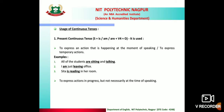Usage 2: to express actions in progress but not necessarily at the time of speaking — actions happening around this time. For example: 'India is exporting sugar to other countries.' Here 'is exporting' indicates present continuous tense. It may not be happening at this exact moment, but it is happening these days.